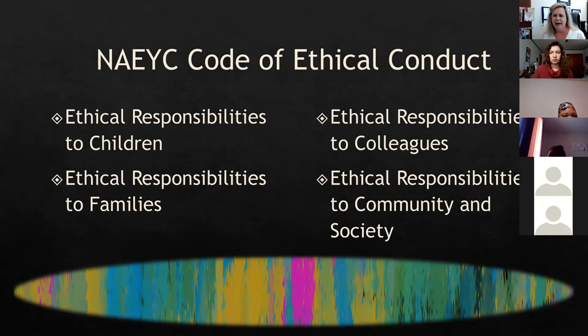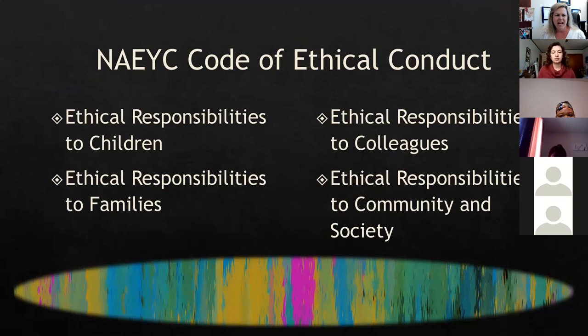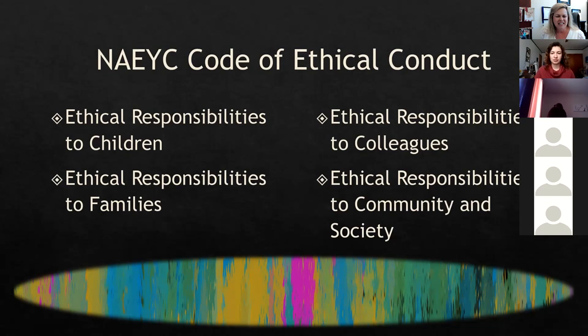By now all of us know the NAEYC code is divided into four sections — the responsibilities we have as educators to children, to families, to colleagues, and to the community and society. In each of your scenarios you typically have to decide who you're responsible to, and that can be a challenge. I get the answers from NAEYC and sometimes I'm not sure what the answer should be, but you're doing a really good job.